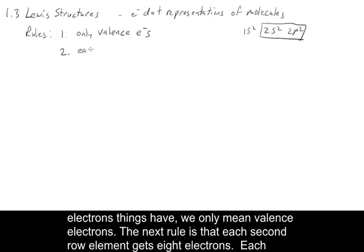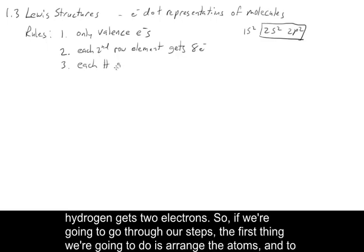The next rule is that each second row element gets eight electrons, and each hydrogen gets two electrons.